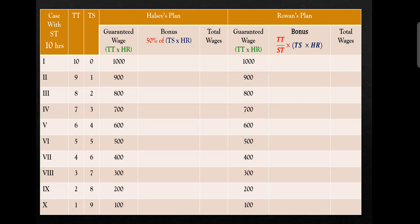When we talk about guaranteed wages, it depends upon the time taken by the worker. In case 1, the worker takes 10 hours at 100 rupees hourly rate, so guaranteed wages are 1,000 rupees. When we look at the third column — time saved — where there is time saved, there will be a bonus for the worker. In case 1, no time is saved, so there is no bonus. Total wages under either plan are 1,000 rupees.